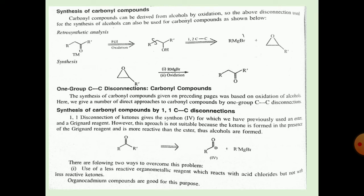Next is a synthesis of a carbonyl compound — again, the ketone. The carbonyl compound can be derived from the alcohol by oxidation, as shown above. The retrosynthetic analysis: first, FGI converts the carbonyl group into the alcohol, then a 1,2 disconnection shows RMgBr (Grignard reagent) reacting with an epoxide ring. In the synthesis, the epoxide ring reacts with RMgBr, and the next step is oxidation to form the ketone.